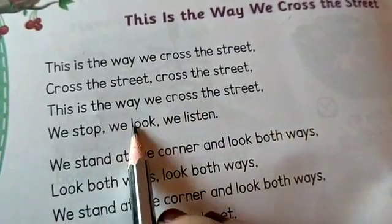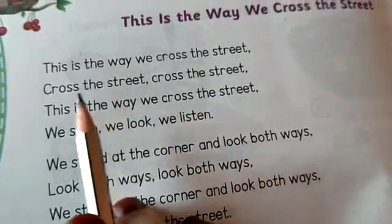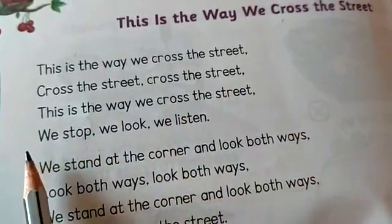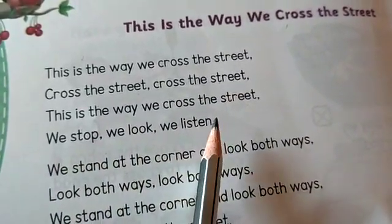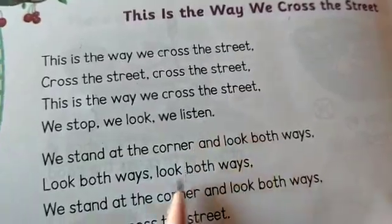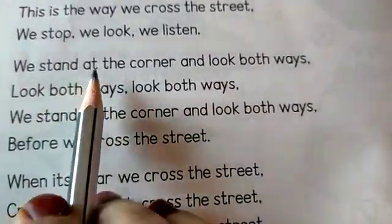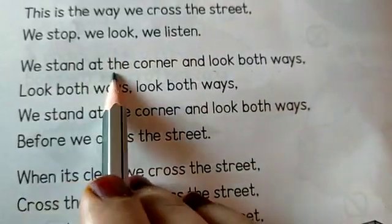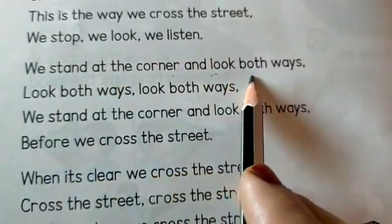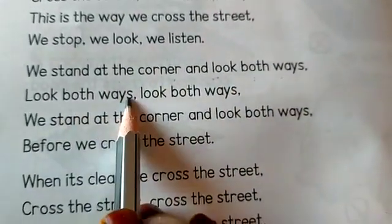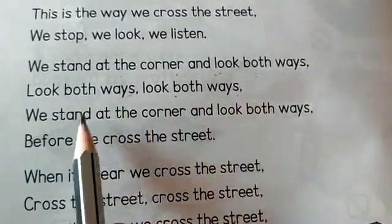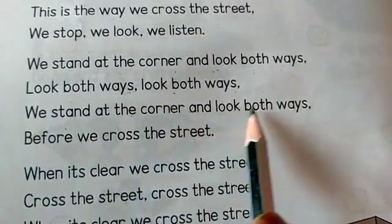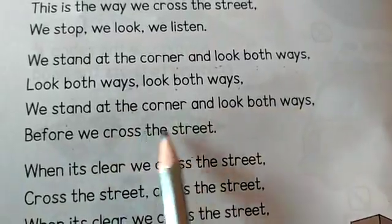We stop. We look. We listen. Whenever you cross the street, we have to first stop and look to the left-hand side and then listen. We stand at the corner and look both ways before we cross the street.